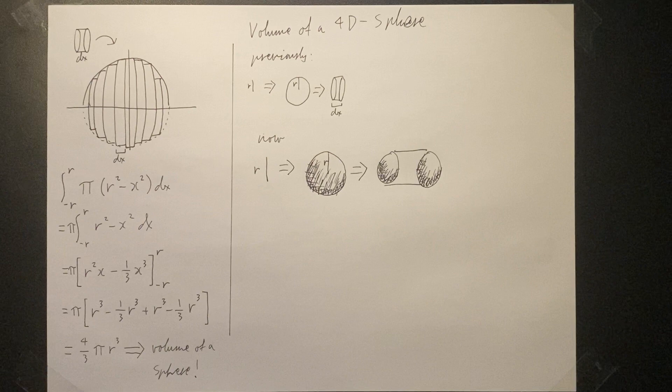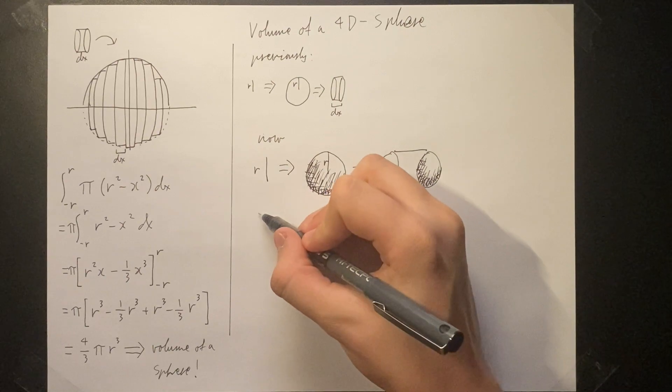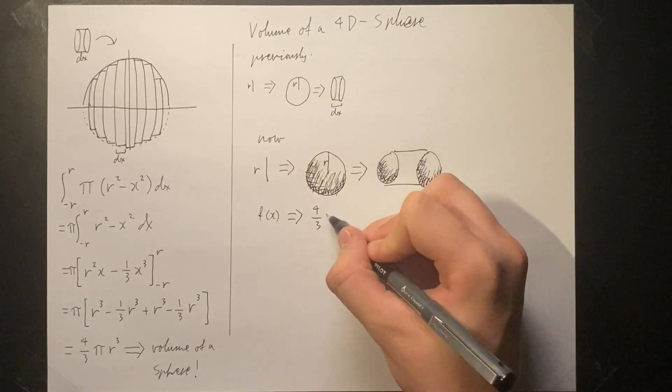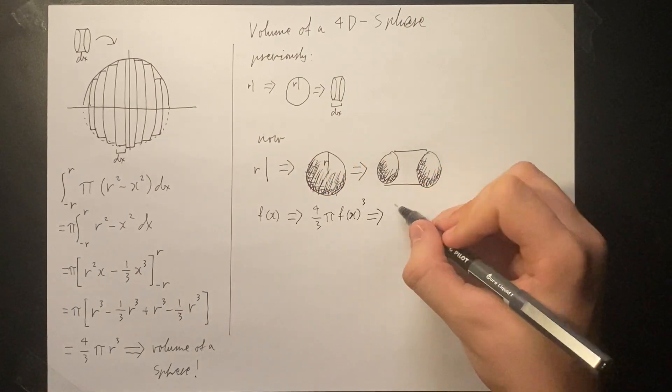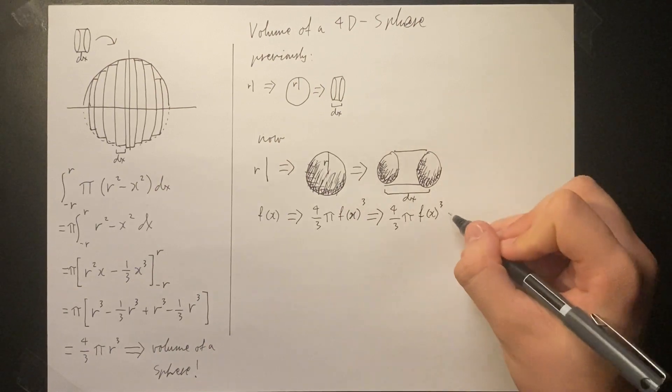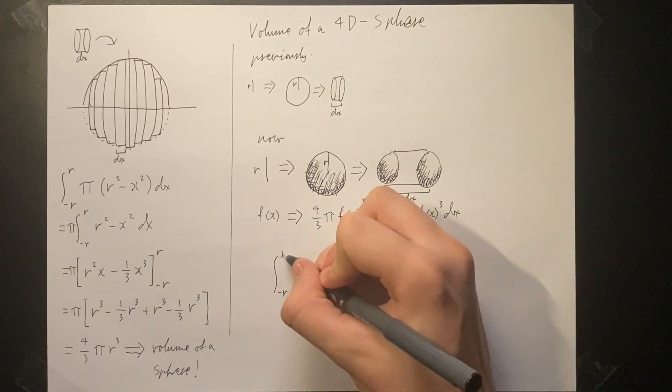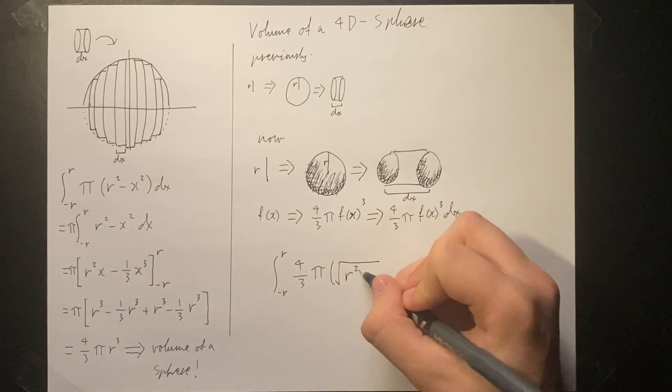Now for the function f of x. To rotate it into a sphere, we cube it and multiply by four-thirds pi. To make the spherinders, we multiply by dx. By integrating from negative r to r, we should obtain the volume of a four-dimensional sphere.